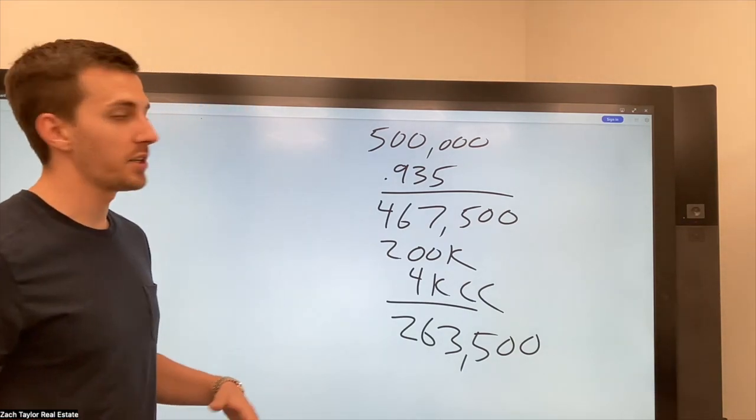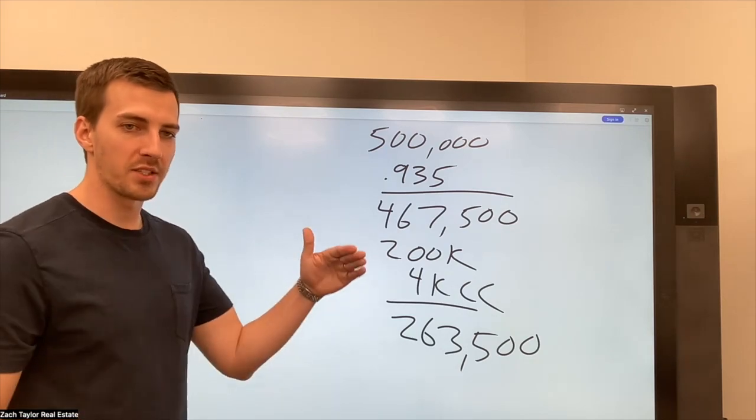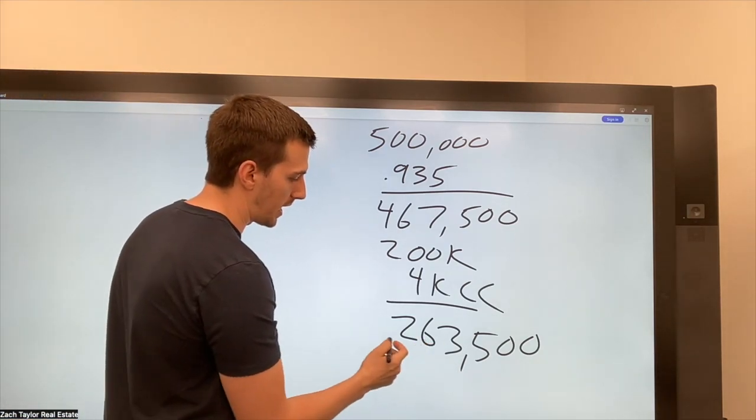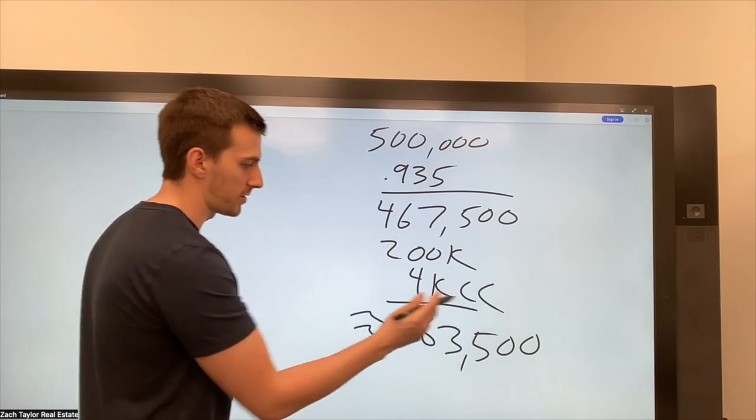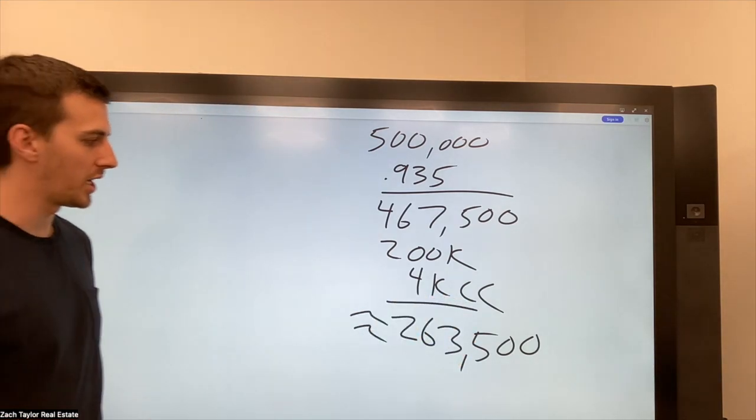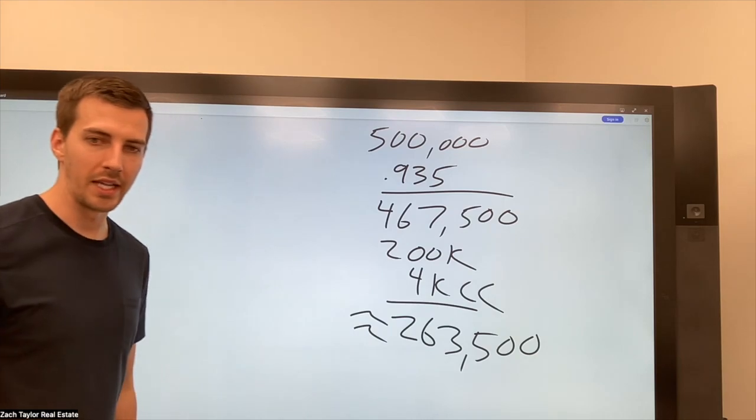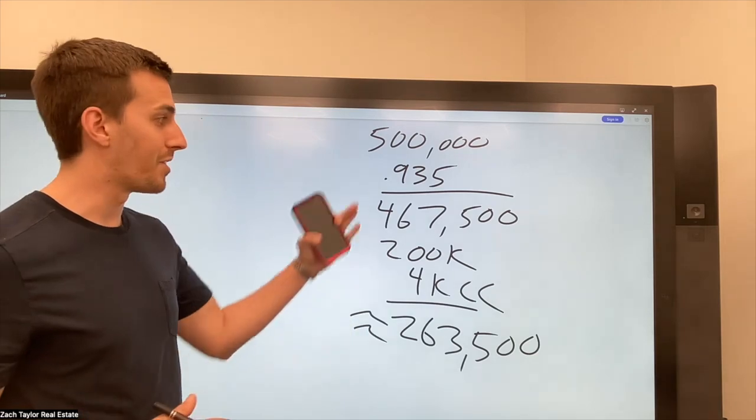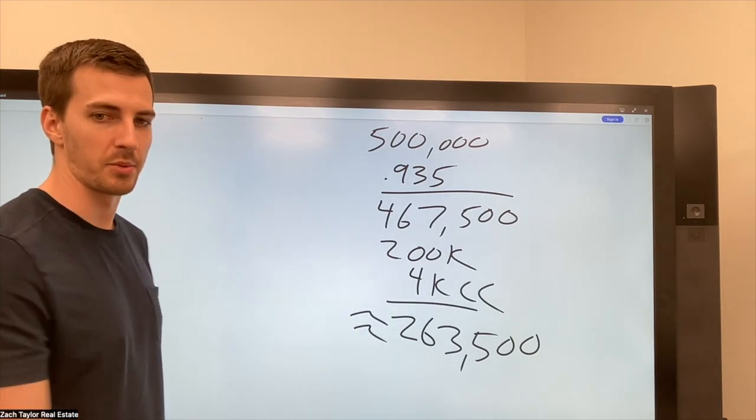So then I show up on the listing appointment. I bring my seller estimated net sheet. I show them these numbers. I say, you'll roughly make about this. It is just an estimate. It can change. Does this look good to you? And they say, oh, wow, that's $13,500 more than I wanted.